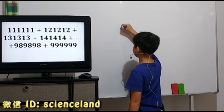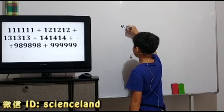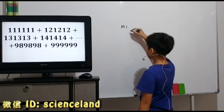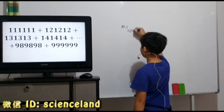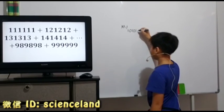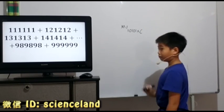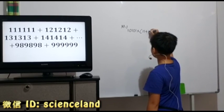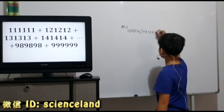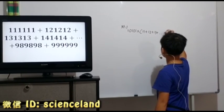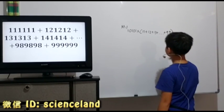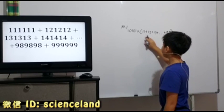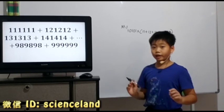First method. We're going to take out 10101 out of every number. Now we find how many numbers are there in the brackets.